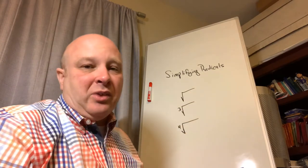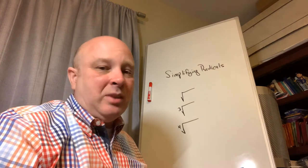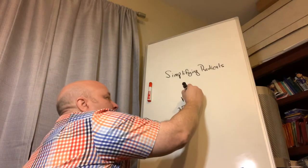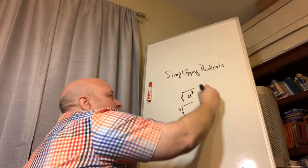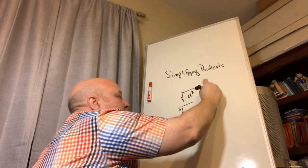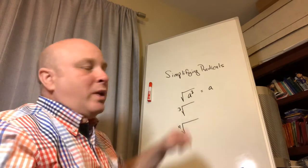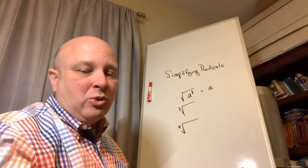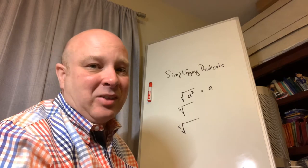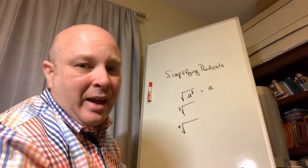When simplifying a radical, the square root of a squared would be a, because a squared is a times a. These index numbers are going to be related to exponents — that's the key relationship to keep in mind.